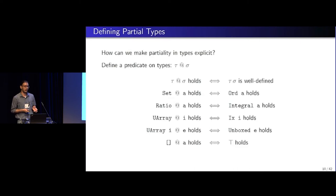Ratio at a holds when integral a holds. U array has two separate kinds of equations here, where u array at i holds when i is indexable, and u array at e holds when e is unboxed. Imagine unboxed to be a special type class that currently does not exist. But you can imagine there can be one type class that says certain types are unboxed. And the last one says that there are types that are total, so we should also account for those. Predicates like list applied to A hold everywhere. So we can have a uniform treatment for partial and total types.